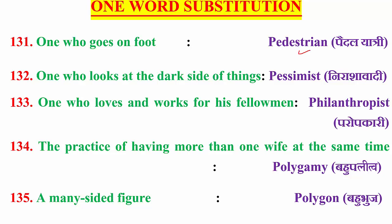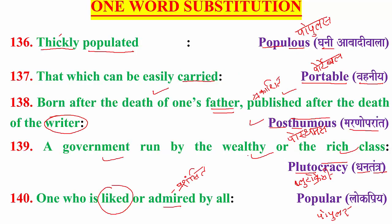Philanthropist — paropkari — one who loves the works of his fellow man. Then polygamy — bahupattnitva — the practice of having more than one wife at the same time. And the last one was polygon — bahubhuj — a many-sided figure.